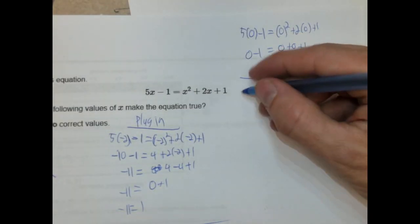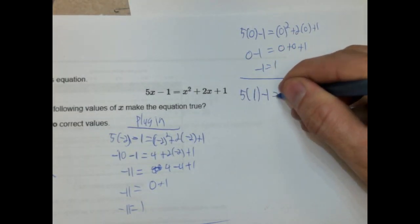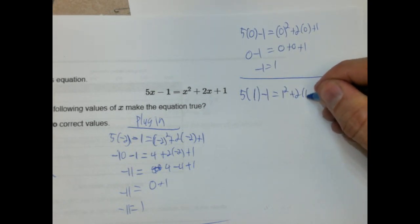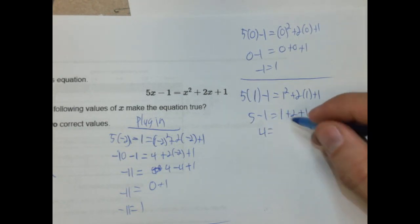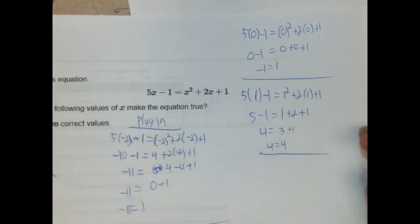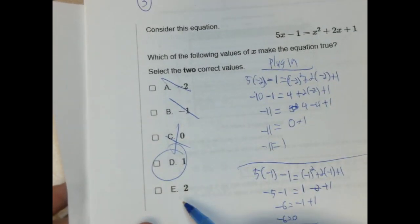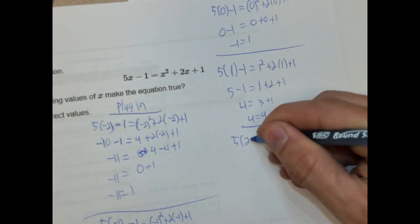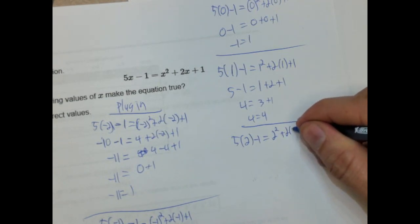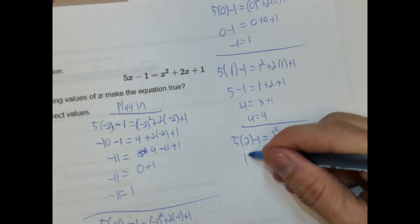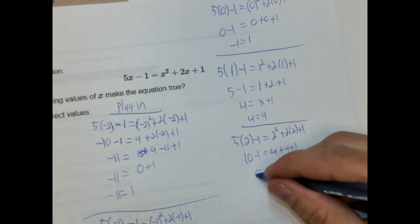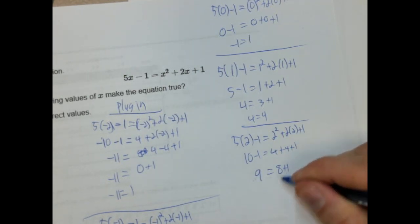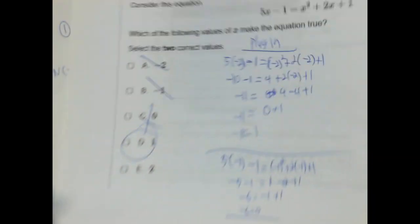So hopefully it's the last 2. So we'll plug in 1. So 5 times 1 minus 1 equals 1 squared plus 2 times 1 plus 1. 5 times 1 is 5 minus 1. And then 1 squared is 1 plus 2 times 1 is 2. 5 minus 1 is 4. 1 plus 2 is 3 plus 1. 4 equals 4. So that works. Last 1 is 2. So 5 times 2 minus 1 equals 2 squared plus 2 times 2 plus 1. 5 times 2 is 10 minus 1. 2 squared is 4. 2 times 2 is 4 plus 1. 10 minus 1 is 9. And 4 plus 4 is 8 plus 1 is 9. So 9 equals 9. So that works. So we have the 2 we need.